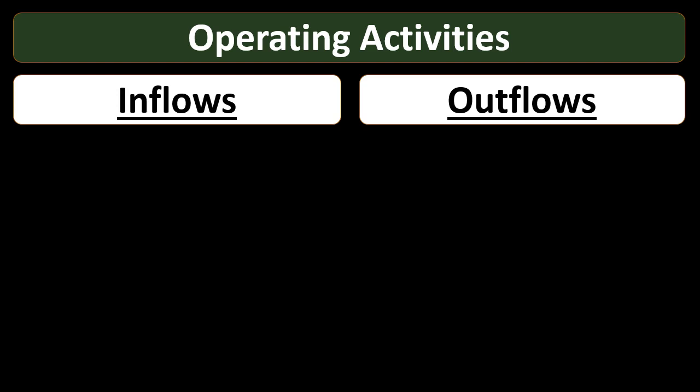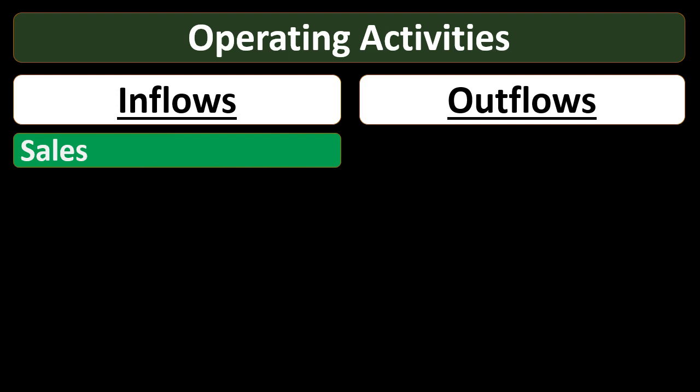One way to think about operating activities is: if we were to have the income statement on a cash basis, what would the inflows and outflows be? That's basically what's in the operating activities. Note that operating activities ties out to the income statement — not on an accrual basis as a normal income statement, but on a cash basis.